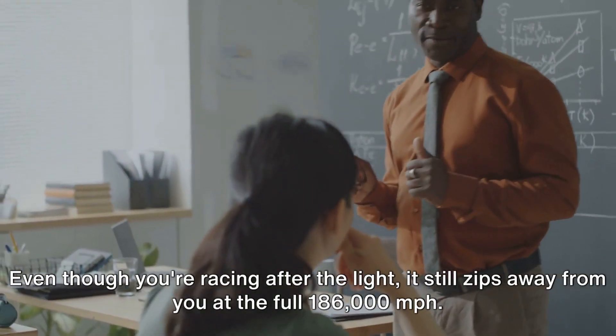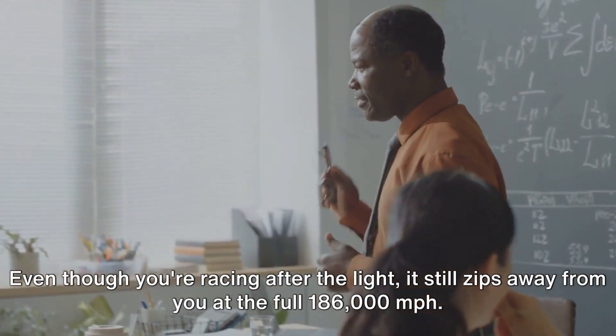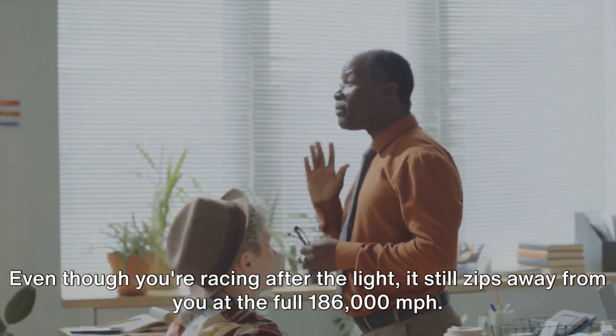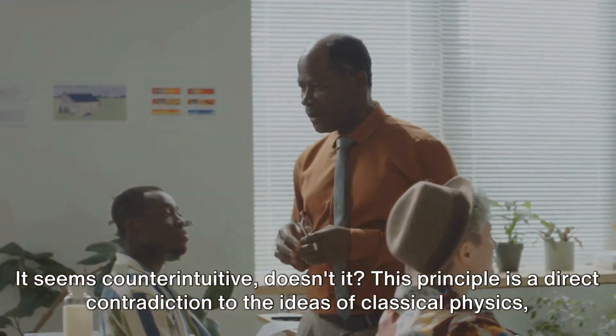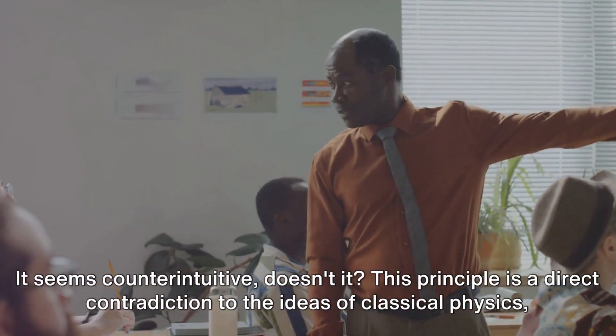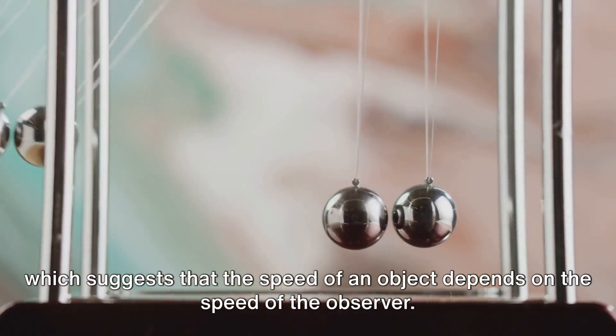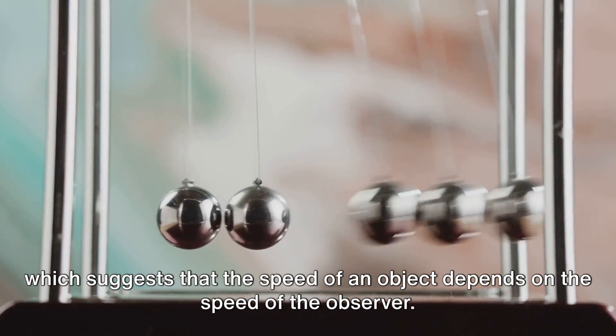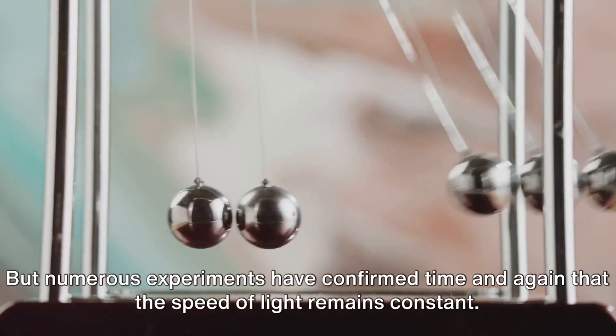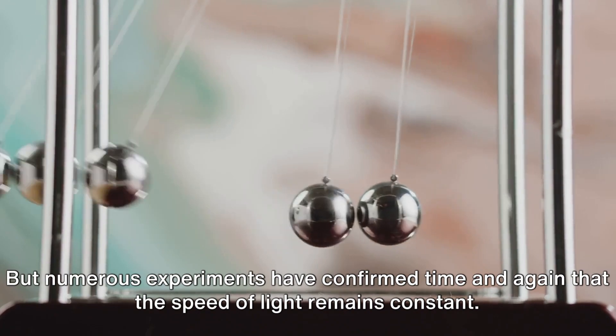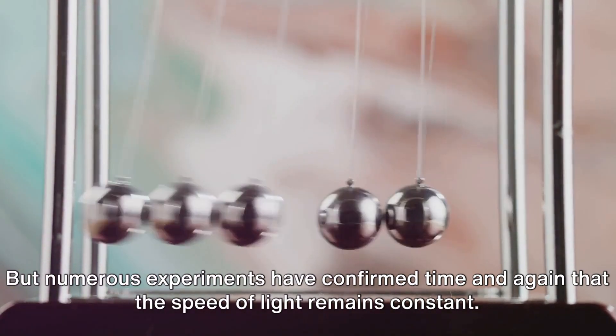But that's not the case. Even though you're racing after the light, it still zips away from you at the full 186,000 miles per second. It seems counterintuitive, doesn't it? This principle is a direct contradiction to the ideas of classical physics, which suggests that the speed of an object depends on the speed of the observer.